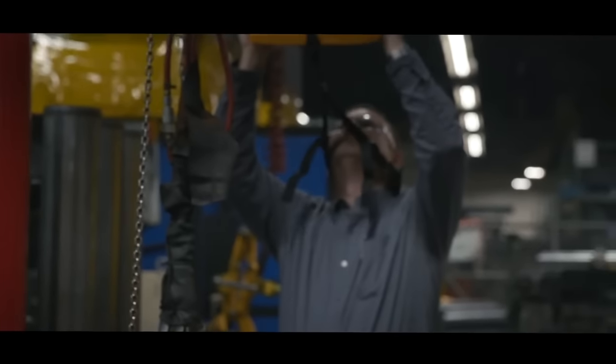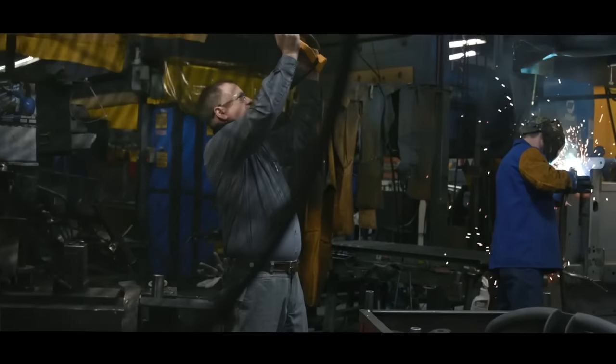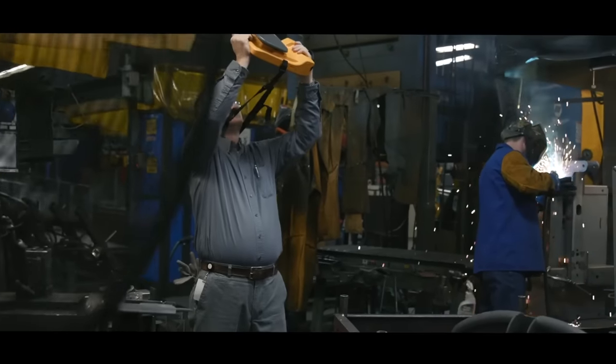The Fluke II900 Sonic Industrial Imager works in noisy places, without having to shut down the line.